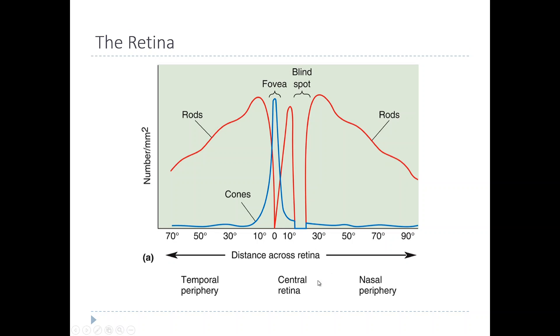If you start in the central retina and move to the side, the number of cones, this blue line here, peaks right here at the fovea. The number of rods actually drops to zero near the fovea and then increases quickly as you go away from the fovea. As you move further and further away from the center, the total number of photoreceptors goes down, so your visual acuity goes down as you move away from the fovea.